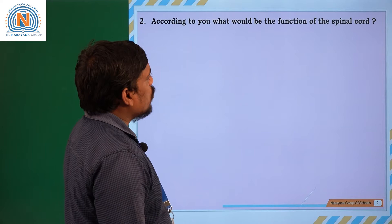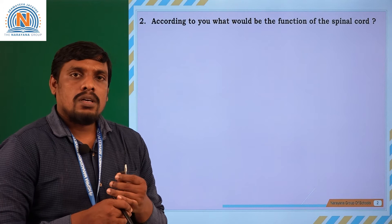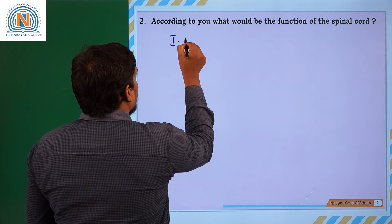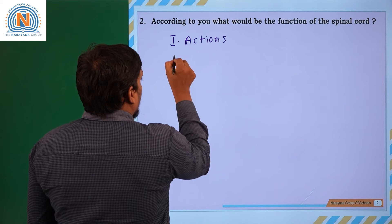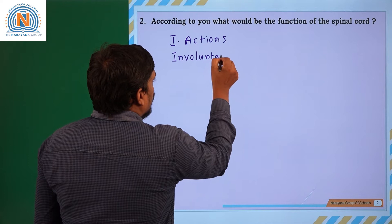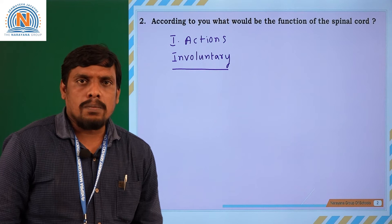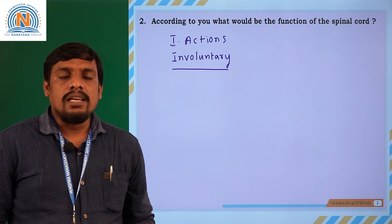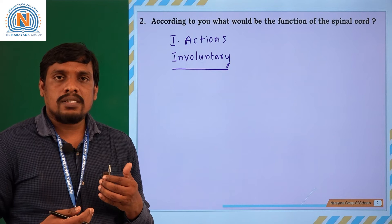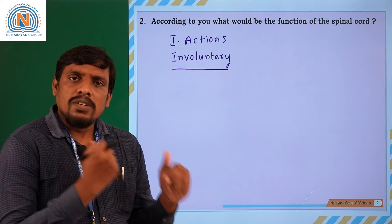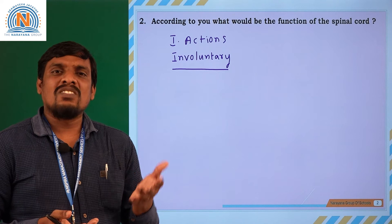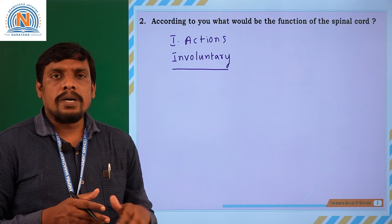Next question: What would be the function of the spinal cord? What are the major functions of the spinal cord? The spinal cord plays an important role in controlling involuntary actions — sudden movements generally called involuntary actions. For example, if you suddenly step on a nail, you will immediately withdraw your leg. Within a very short time, you will withdraw your leg from the sharp object. This is possible because it is an involuntary action, received and processed by the spinal cord.